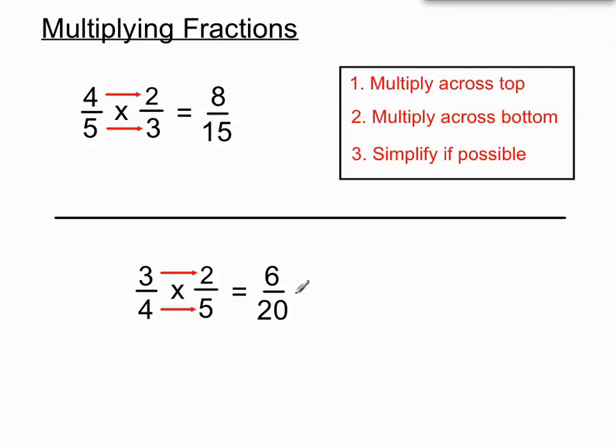It is possible to simplify this down further. Can you see that 2 goes into the top 3 times and 2 goes into the bottom 10 times? It's important that we divide the top and bottom by the same number in that situation to simplify 6 twentieths down into 3 tenths.